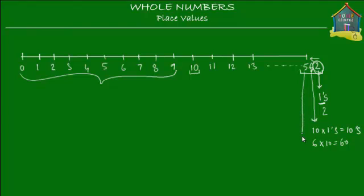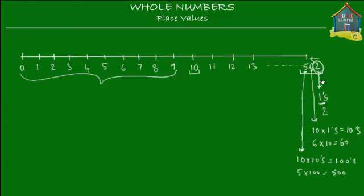How about 5? Well, 5 is one place further to the left, so it's in a place 10 times higher than the 10's place. 10 times higher than the 10's place is the 100's place. So the 5 is in the 100's place, and its value is 5 times 100, which is 500. So when my mind sees 5, 6, 2, it calculates that the value is 500 plus 60 plus 2, and that is 562.